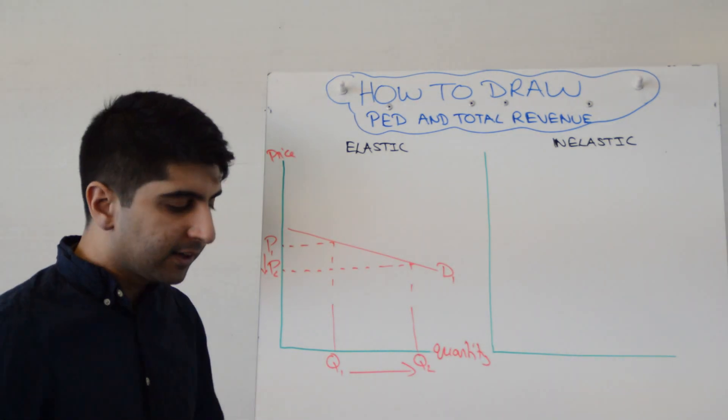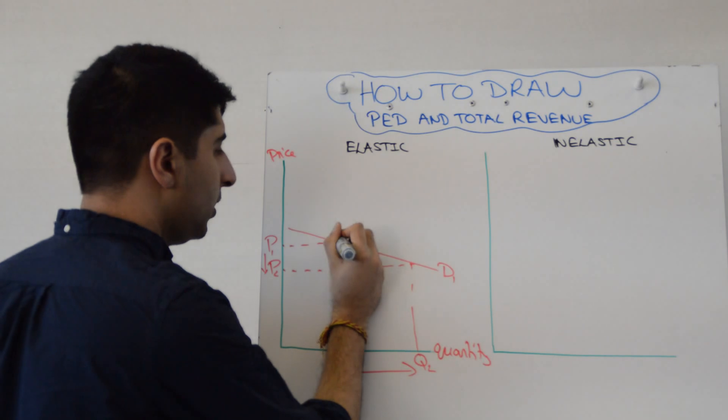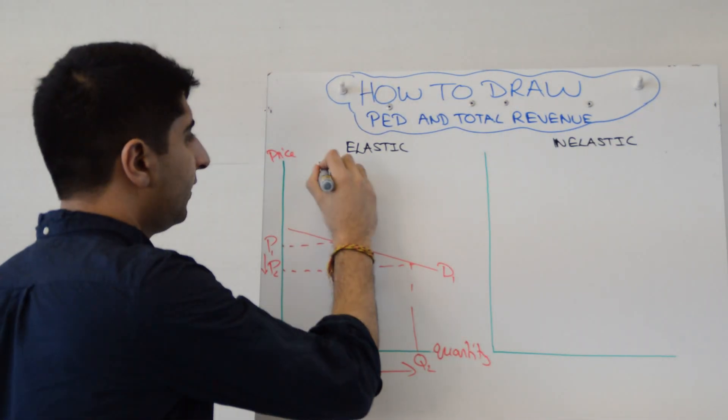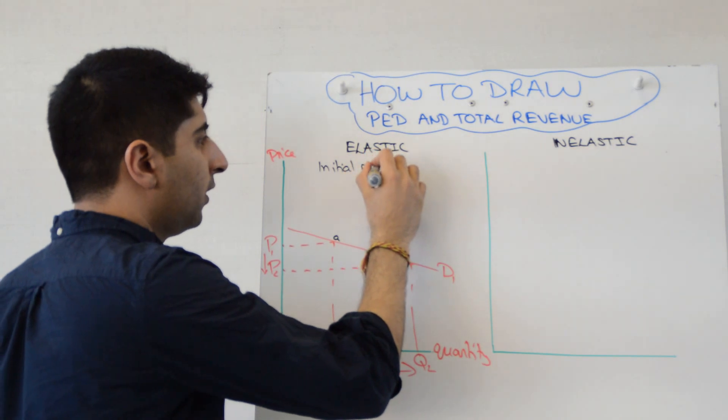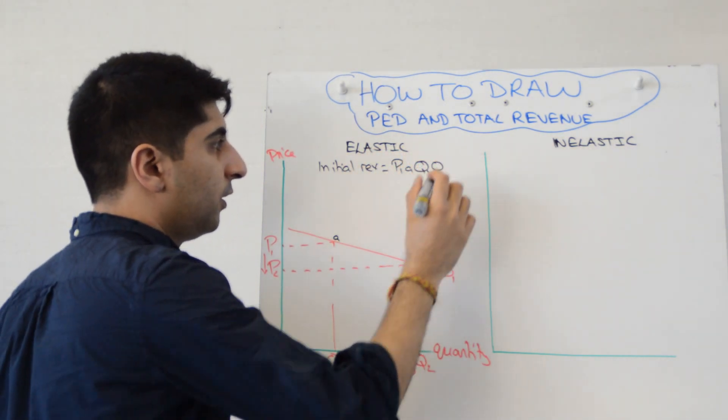But now we want to make the link to total revenue. So initial total revenue was P1, A, Q1, and 0. If you want to write that above, you can. So initial rev was equal to P1, A, Q1, 0. Worth doing in an exam situation.